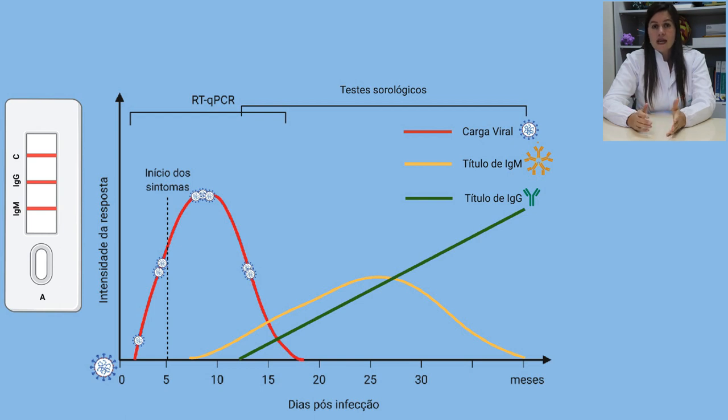Os anticorpos aparecem em quantidade detectável para uma grande parte de pessoas a partir do sétimo dia de infecção. Mas, considerando um grupo maior de pessoas, os níveis mais seguros seriam encontrados após 20 dias. E esse então seria o período ideal para esse teste ser utilizado, após 20 dias de infecção.